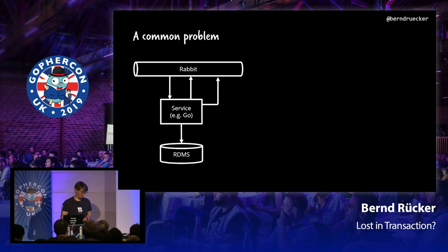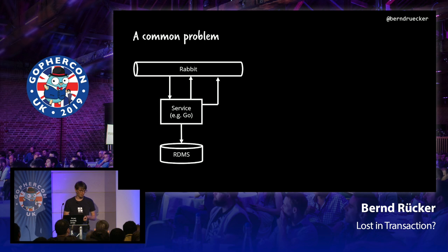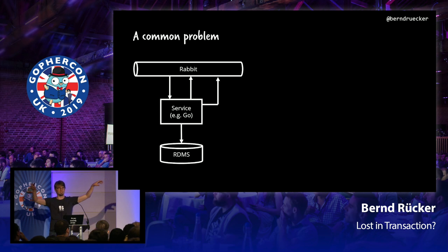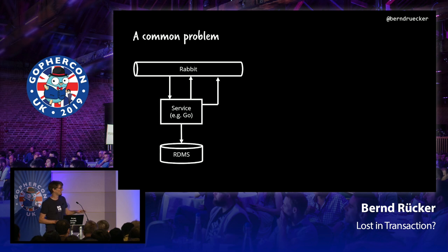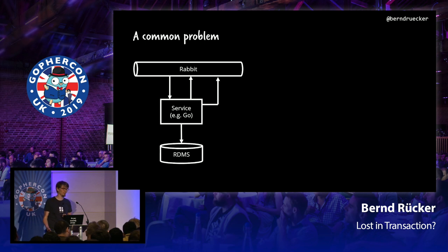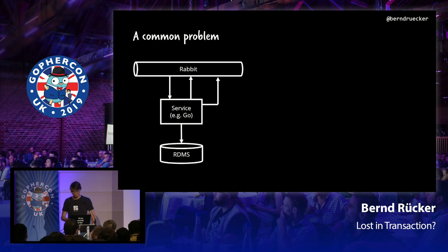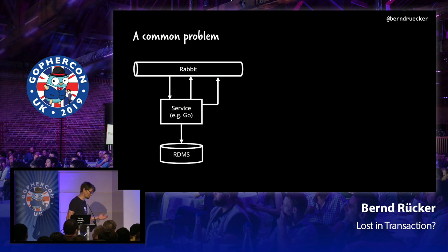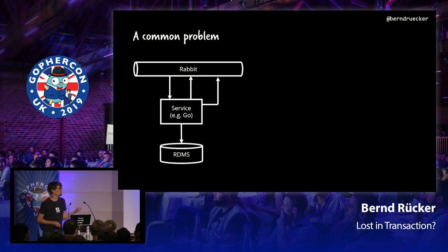I want to kick that off with an arbitrary problem around consistency, which I see quite a lot with different customers and different products. Assume you have some kind of messaging system — let's say RabbitMQ, but it could be anything, Kafka or whatever. Then you build a service which does some business logic, does something useful, and probably writes to a database. Then you want to send a response on Rabbit and emit a couple of other events onto the bus as part of that business logic — telling the world, hey, I did something. That's not really an untypical thing to do.